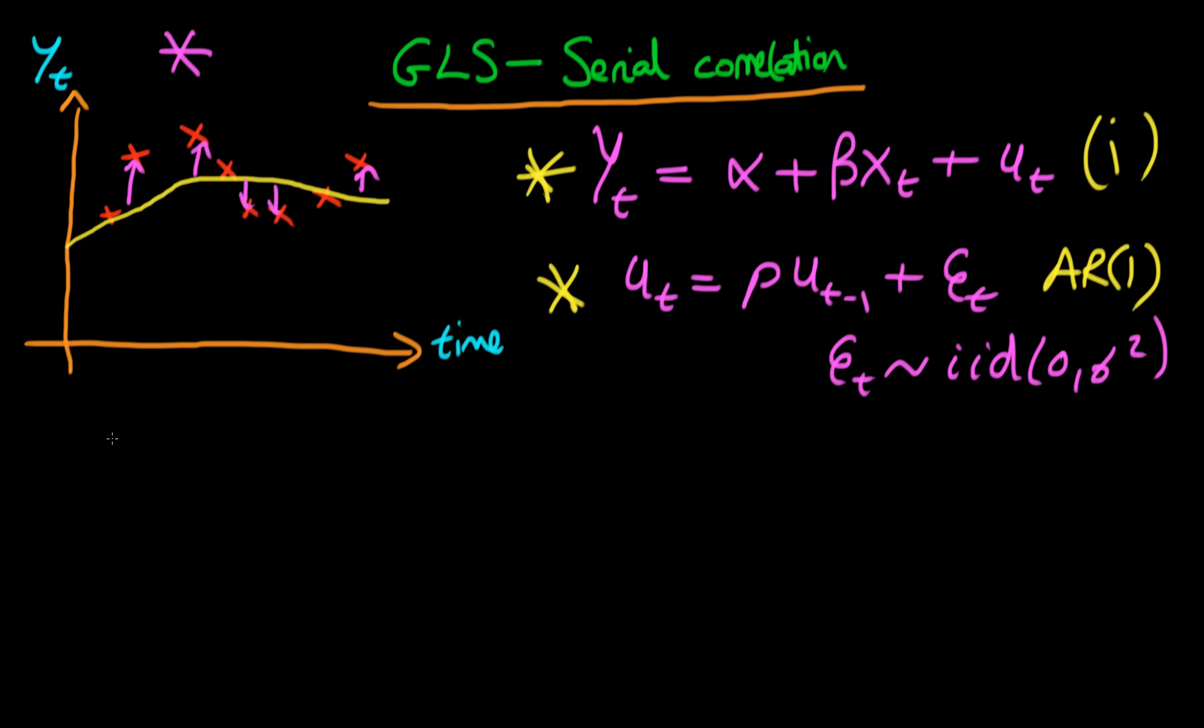The way in which we correct for this is to consider what yt-1 looks like. So yt-1 using this first model is equal to α plus β times xt-1 plus ut-1. All I've done is I've just taken this first model and restated it in terms of yt-1. The reason becomes clear if we take our original yt and then we take off ρ times yt-1.